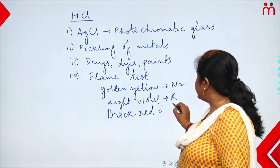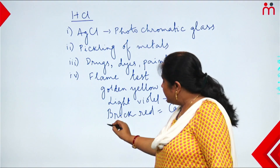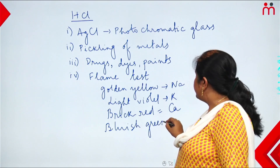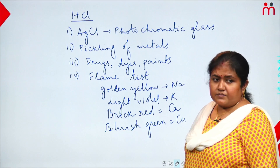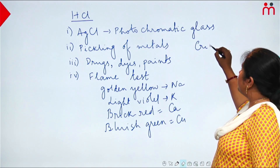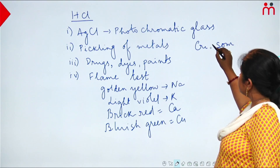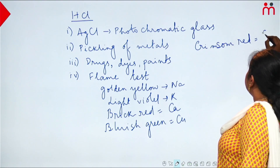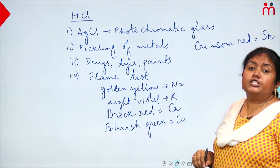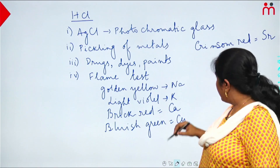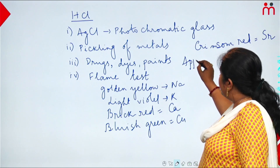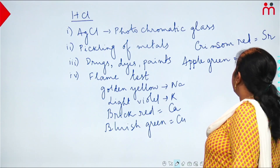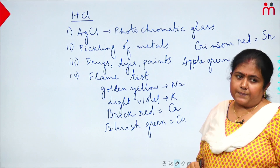Different metals give different flame colors: some give red color, some green. A crimson red color indicates strontium (Sr) is present. An apple green color indicates barium (Ba) is present. These flame test colors are important for identifying metals in salts.